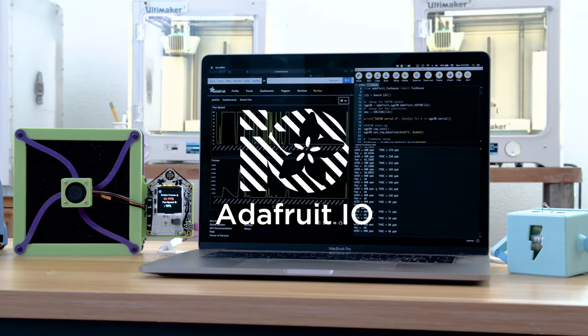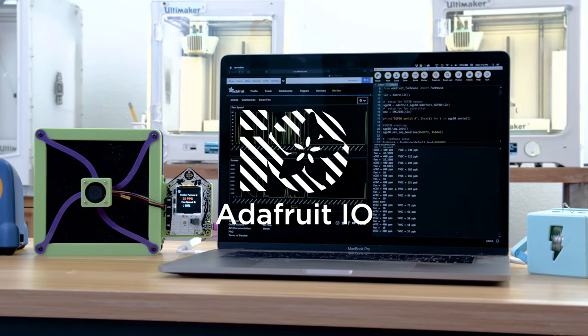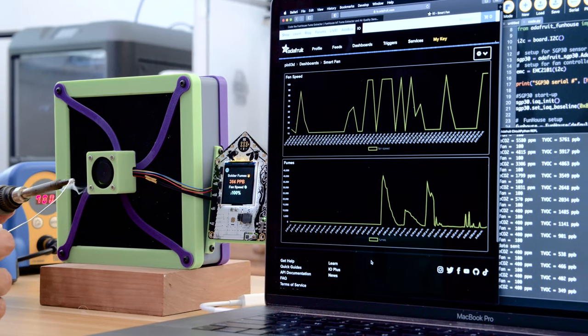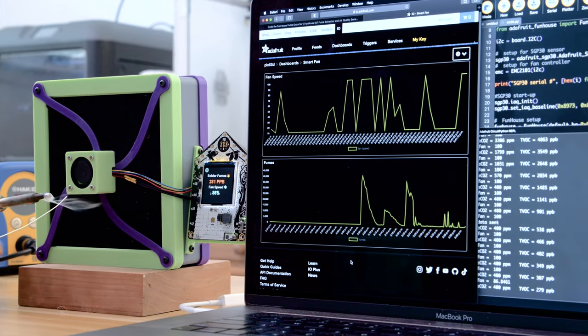With Adafruit IO you can create a visual dashboard of the sensor data in fans feed. Using a line chart we can plot our sensor data and see it change over time by setting up our feeds.